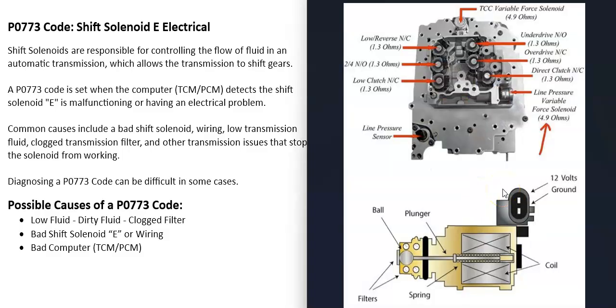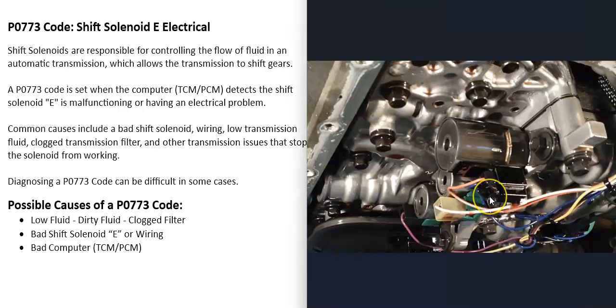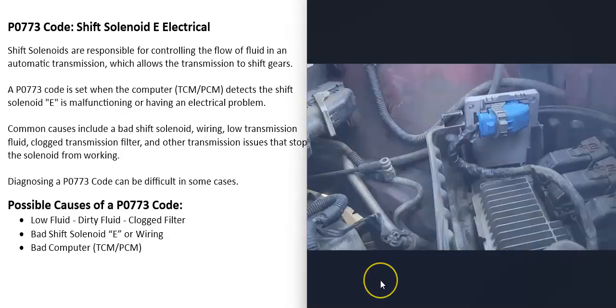You can also use a multimeter to check the voltage going to that solenoid, usually 12 volts. Be sure to check schematics for that vehicle, but usually there's 12 volts going to these solenoids. Check that you've got voltage going there and a good ground, because the most common things that cause this are either that shift solenoid E has gone bad or the wiring going to it.